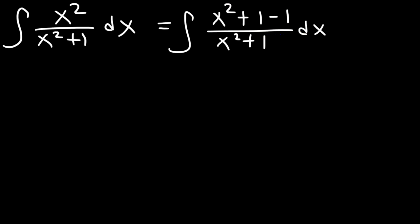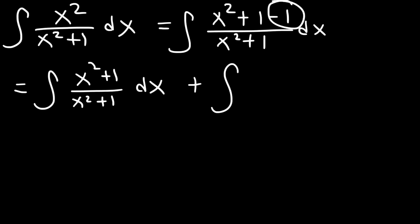Now we want to break it up into two fractions. x² + 1, we're going to divide it by the denominator, and then negative 1, we're going to divide it by the denominator separately. So we can split it into two integrals. The first one is x² + 1 over x² + 1, and the second one is negative 1 over the same denominator.